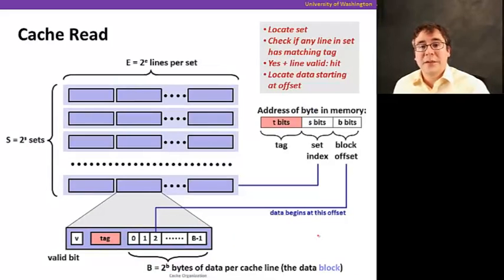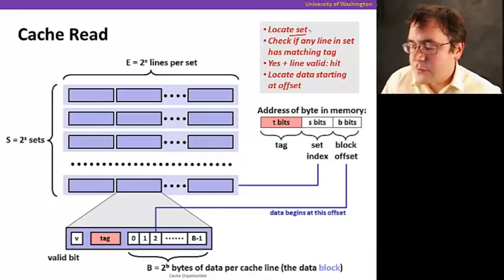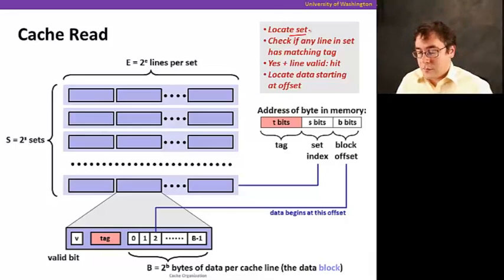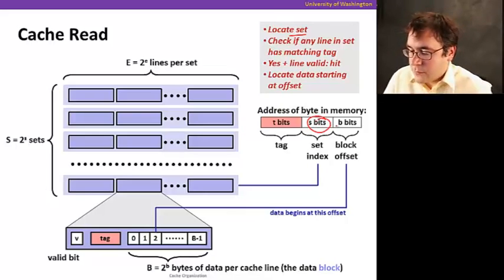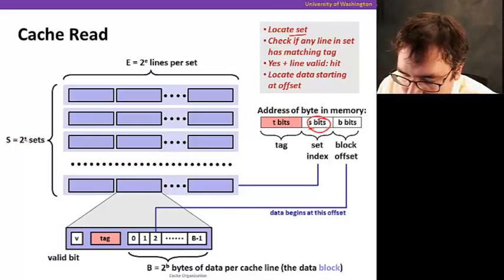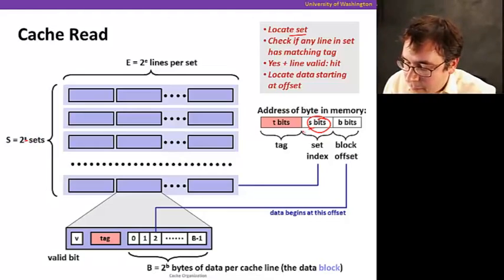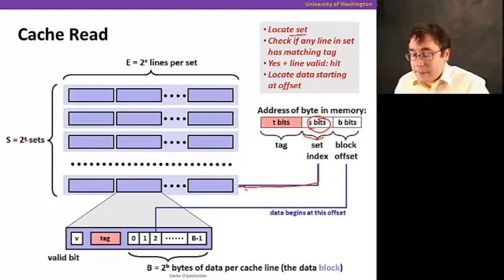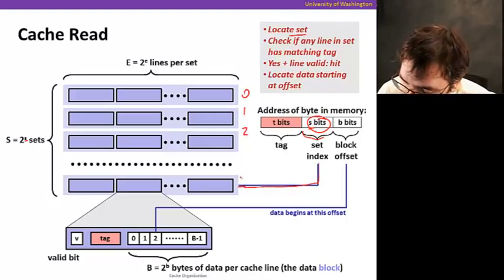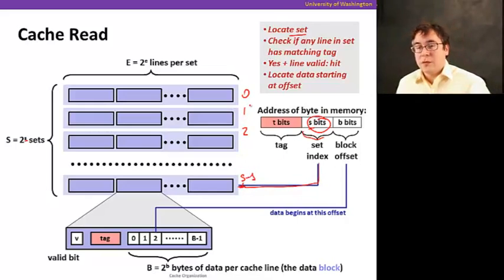Let's see how a cache read works now. There's multiple steps in a cache read. When the processor sends an address to the cache to be looked up, the first thing the cache has to do is locate the set where the data goes. Remember that we saw in the previous example, there's some bits of the address that are used to determine in which set the data goes. And those bits are here in the middle. So we're going to have S bits because if I have 2^S sets, I'm going to use little s bits as the set index. So I'm going to use that part of the address as an index to the cache, which is if this is 0, 1, 2 until S minus 1, and we use that value to determine which set here we're going to choose.